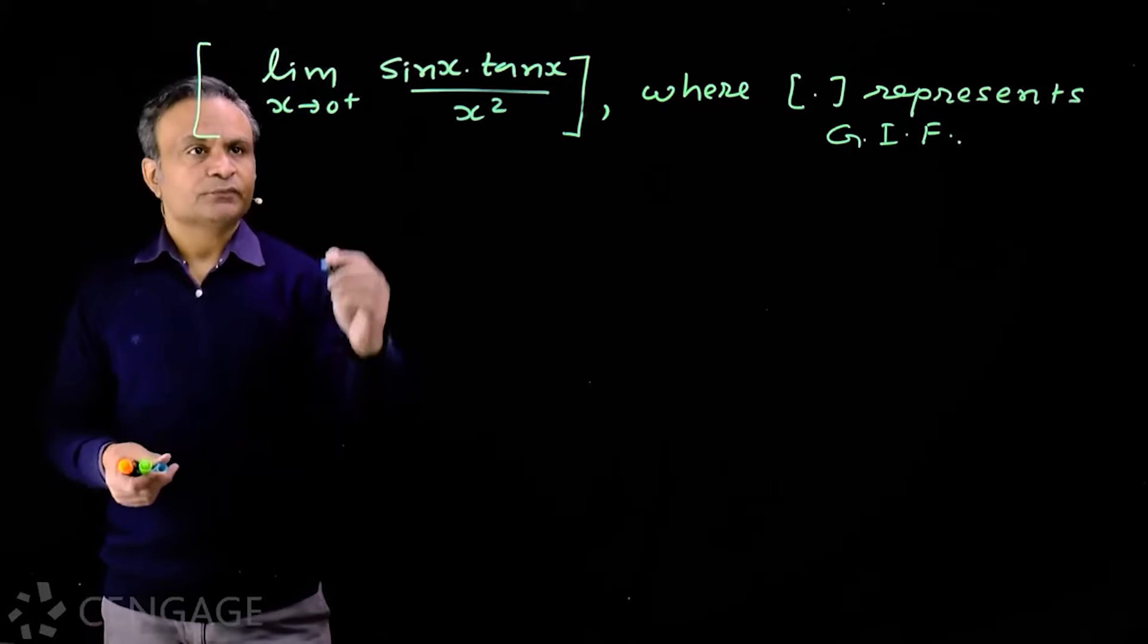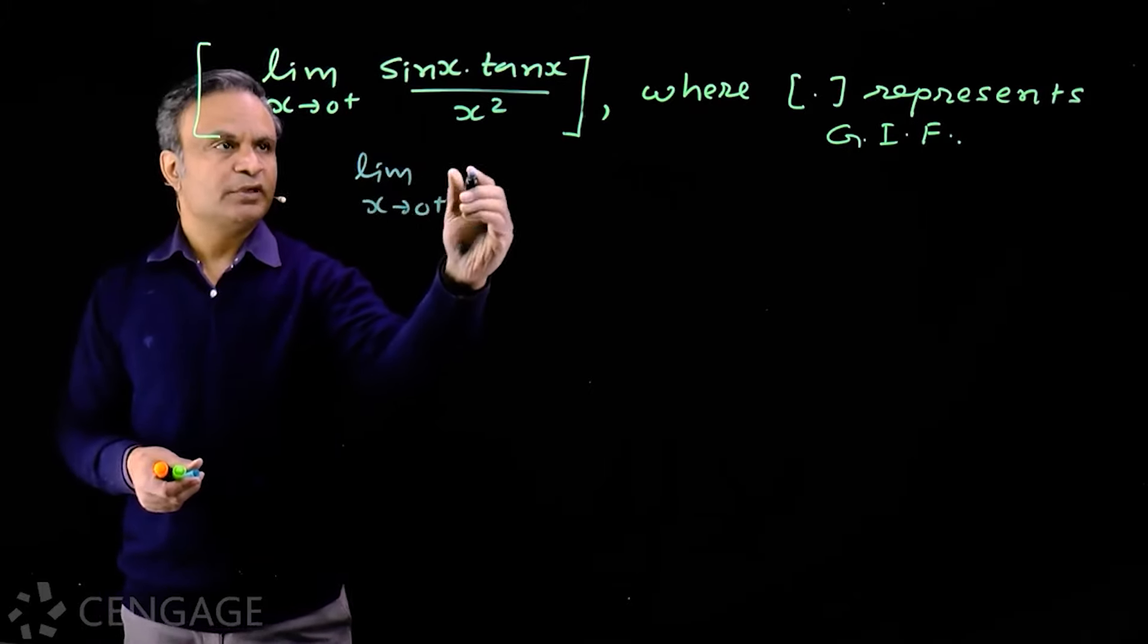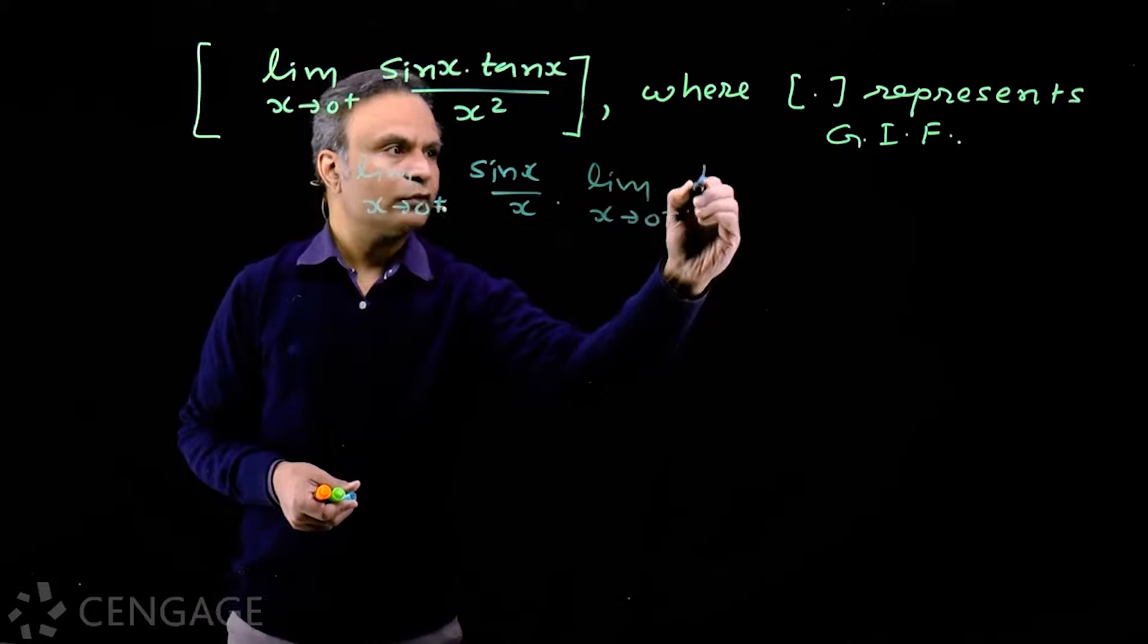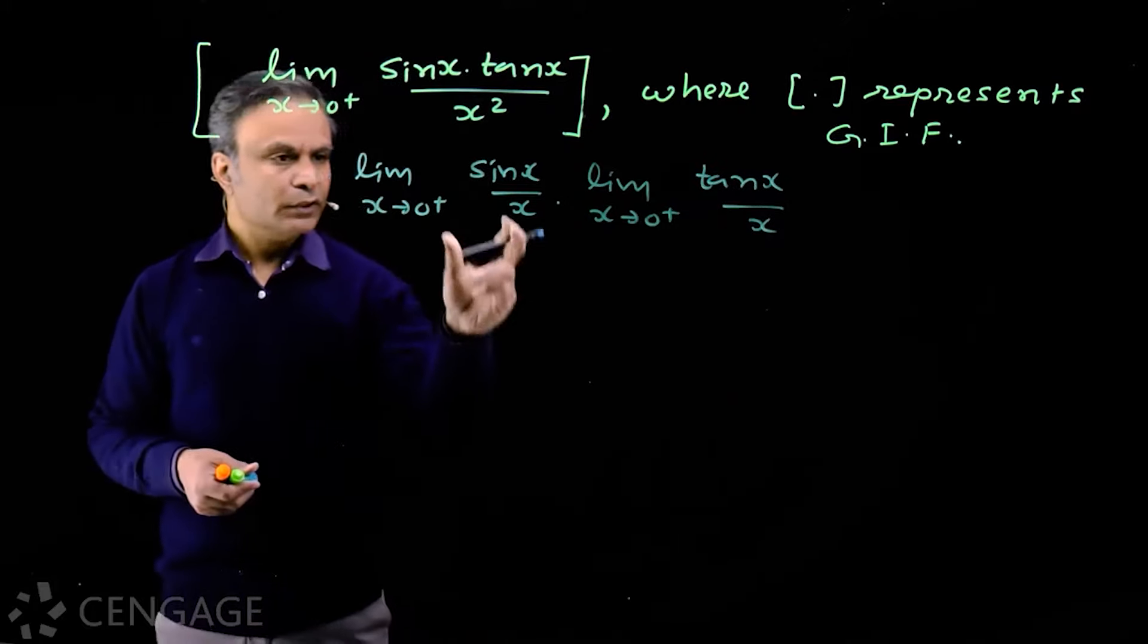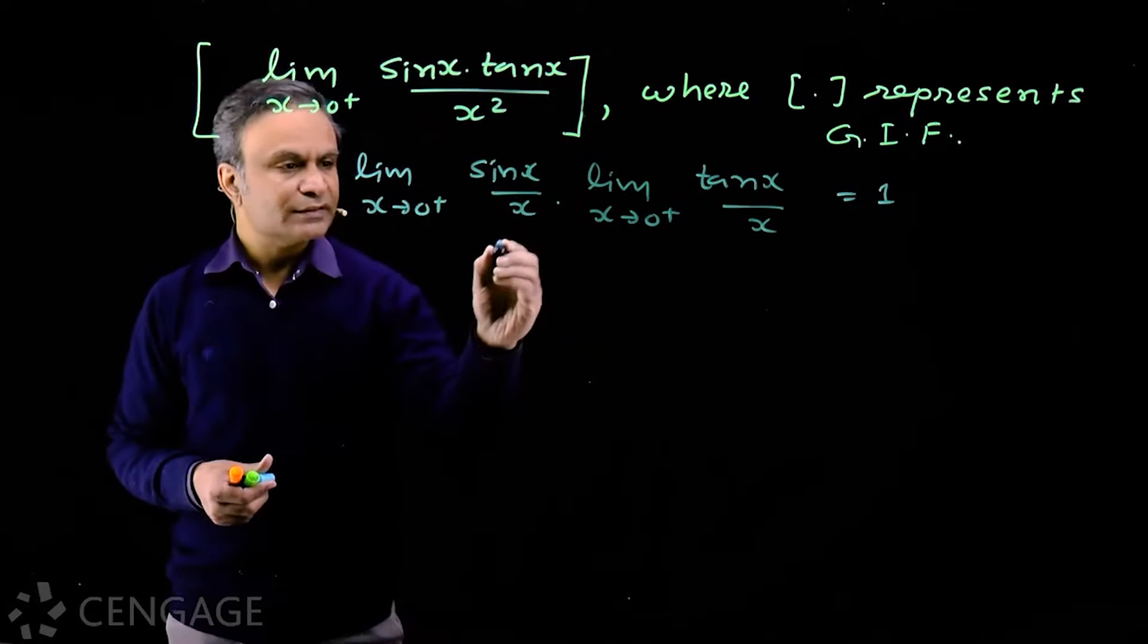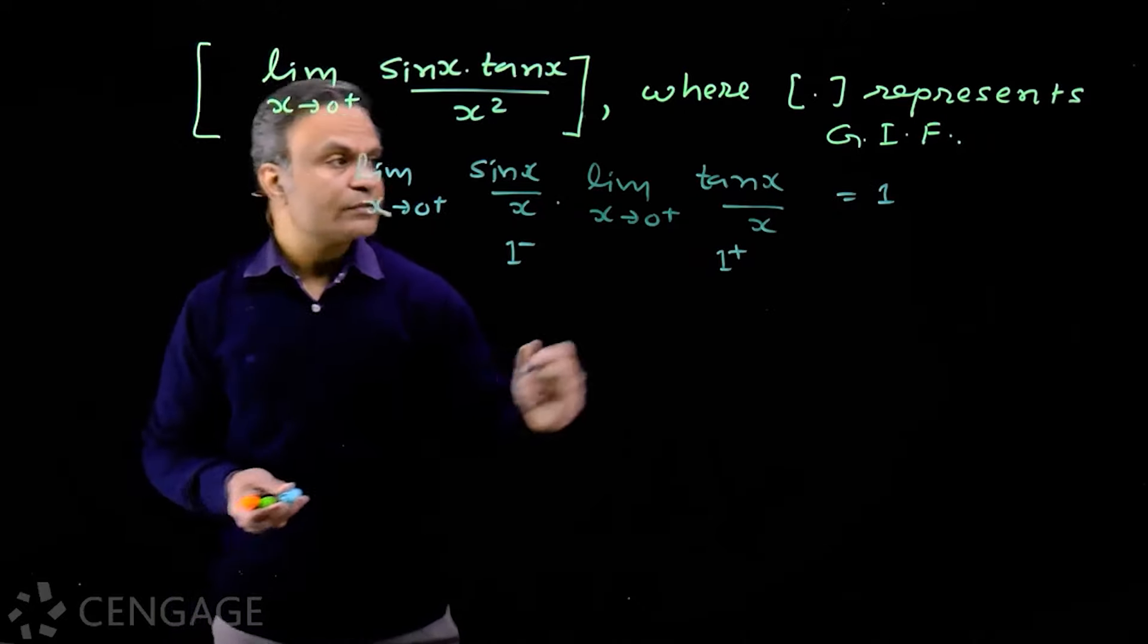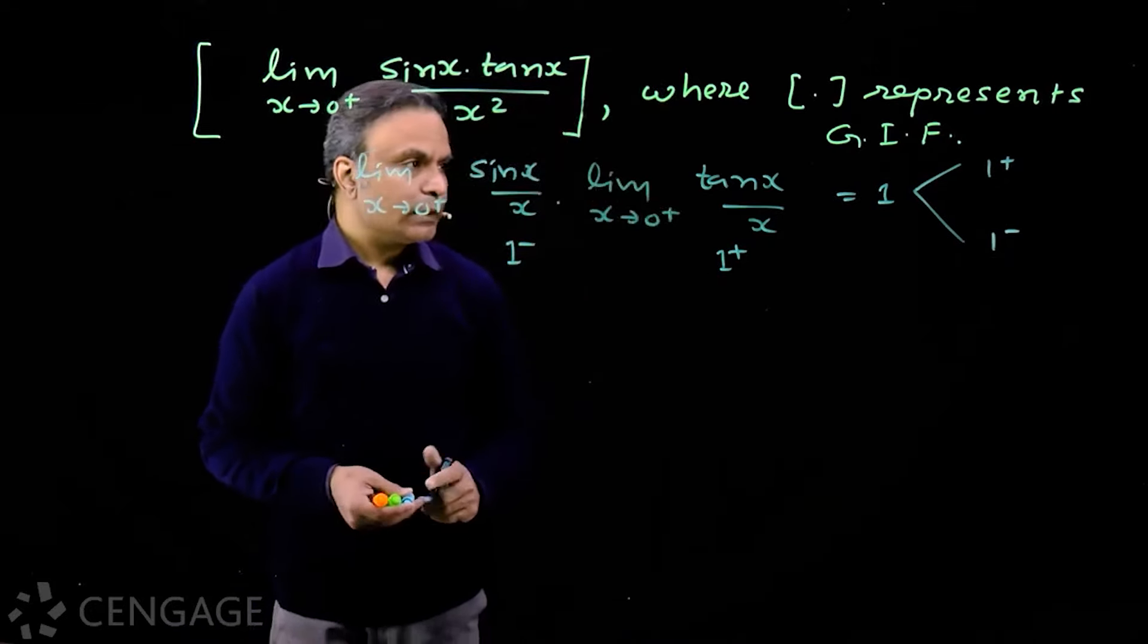Now this limit is simple. We have limit x tends to 0 plus of sin x upon x multiply by limit x tends to 0 plus of tan x upon x. This value is 1, this value is 1, so product is 1. But the problem is this value is 1 minus and this value is 1 plus, so product may be 1 plus or 1 minus.